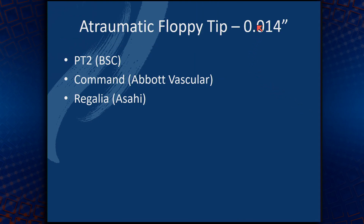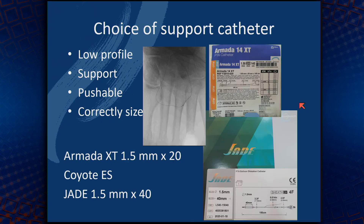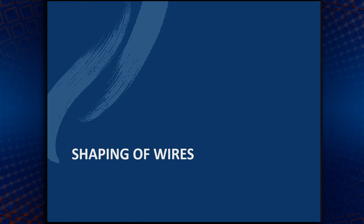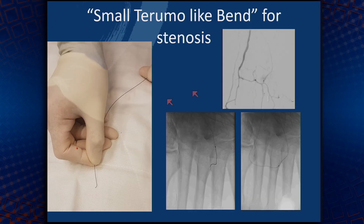My go-to wire for below the ankle is an atraumatic wire — usually a PD-2 wire or the Command series, and also the Reguar series from Masahi — supported with dedicated low-profile, pushable, correctly-sized support catheters. I normally use the Armada XT — a small 1.5 by 20 — a Coyote, or a Jade balloon, which is a non-compliant hybrid monorail balloon. For shaping wires, we shape them in a CTO shape, or in a very tight band of stenosis, a very short bend using a Terumo wire to cross snake-like across the stenosis.